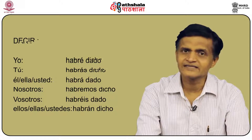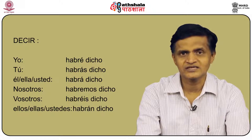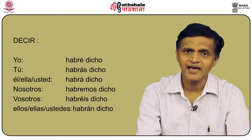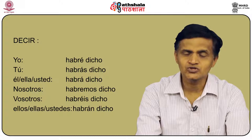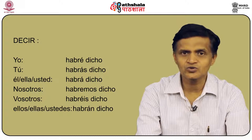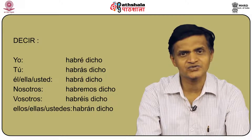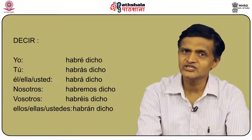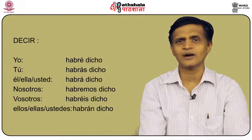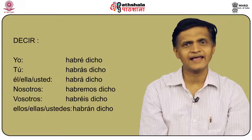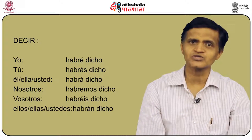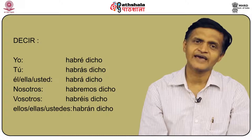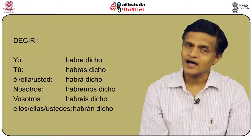Let us pick up decir. For decir, it is irregular so the past participle is dicho: yo habré dicho, tú habrás dicho, él/ella/usted habrá dicho, nosotros habremos dicho, vosotros habréis dicho, and ellos/ellas/ustedes habrán dicho.